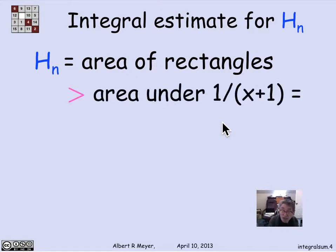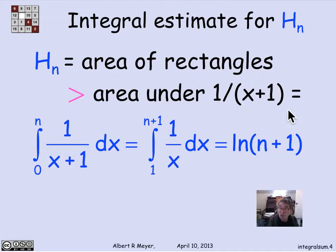So H_n equals the area of the rectangles. It's greater than the area under 1/(x+1), which is the integral from 0 to n of 1/(x+1), which shifting variables is the same as the integral from 1 to n+1 of 1/x dx, which is the natural logarithm of n+1.